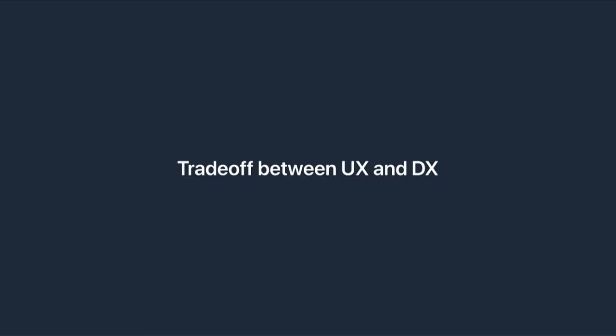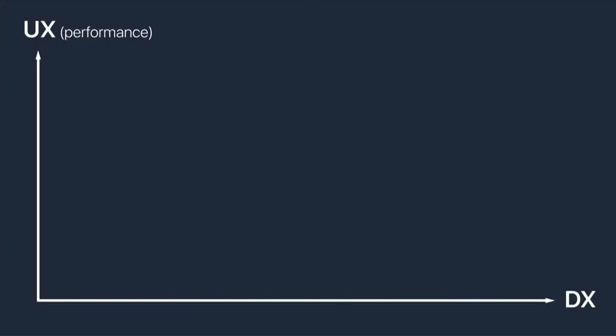The larger point is that we have an ugly trade-off between performance and developer experience. On the y-axis we have user experience in terms of performance; on the x-axis we have developer experience. Here we have plain CSS — performance is okay, but without any abstraction on top it can be hard to work with. Next come CSS preprocessors, which give us syntactic sugar and macros but don't fundamentally change CSS semantics, so while it's friendly to work with there's no impact on performance for end users.